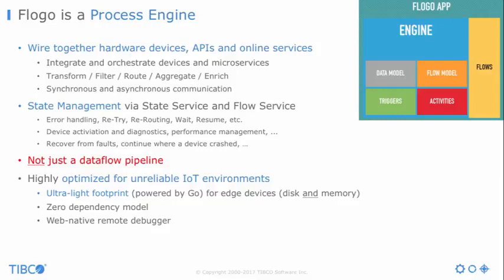FLOGO has an ultra-lightweight footprint — that's one reason why we use Go — which means both low disk and memory requirements. You have a zero-dependency model, so you don't have all the library management issues you get with Java, which is especially important on small IoT devices. You also have a very nice web-native remote debugger, meaning you can use the web UI to debug remote applications without rebuilding or recompiling the source code deployed at the edge. That's very relevant for IoT devices where debugging is not as easy as in a typical Java application.